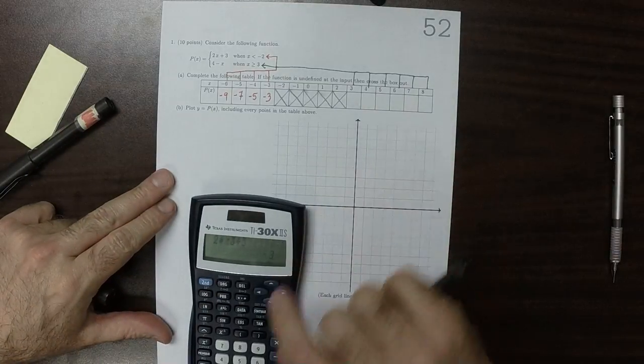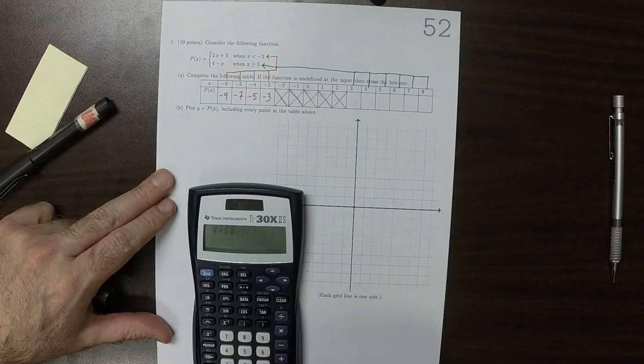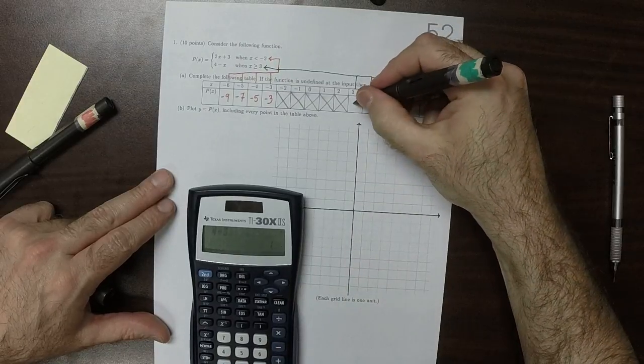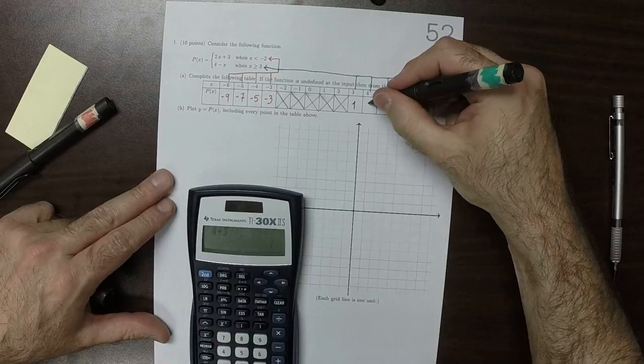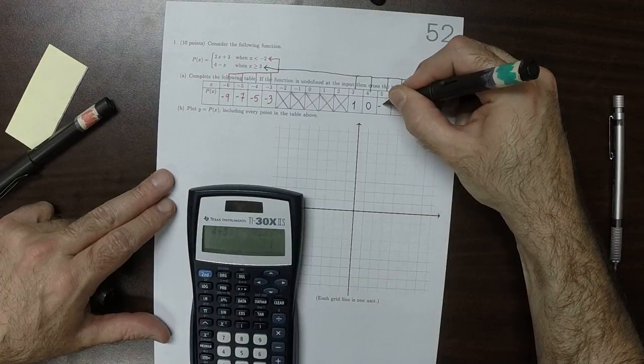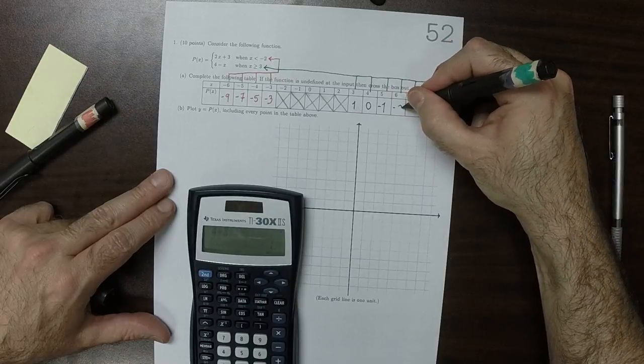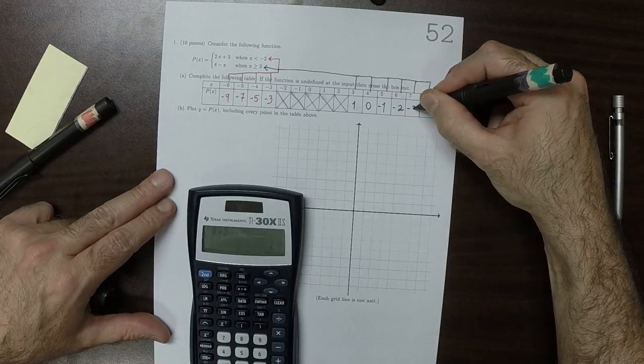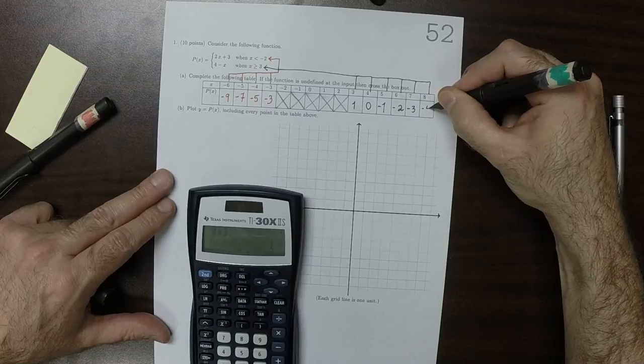For the green points, 4 minus 3 is 1, 4 minus 4 is 0, 4 minus 5 is negative 1, negative 2, negative 3, negative 4.